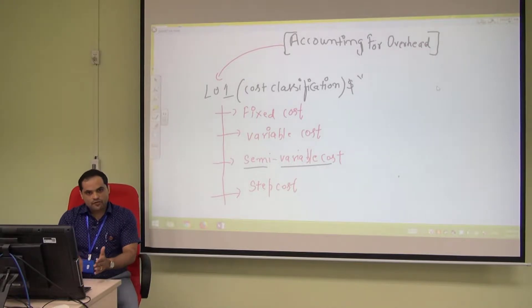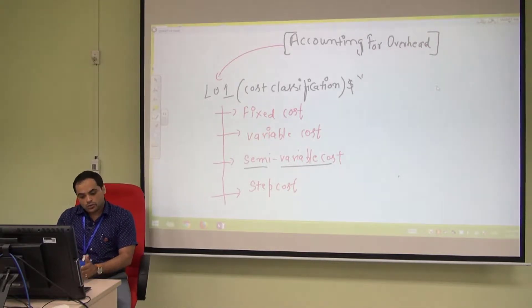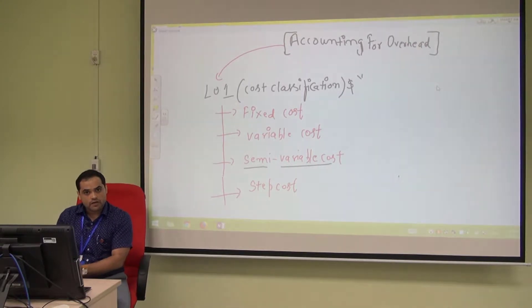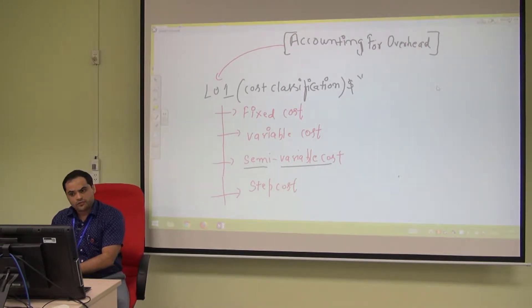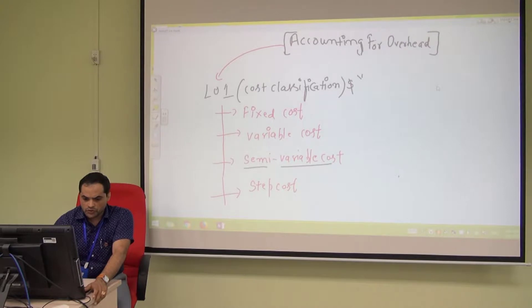But in step cost, fixed and variable both move together — fixed, then variable, then fixed again. I will explain this through the graph.